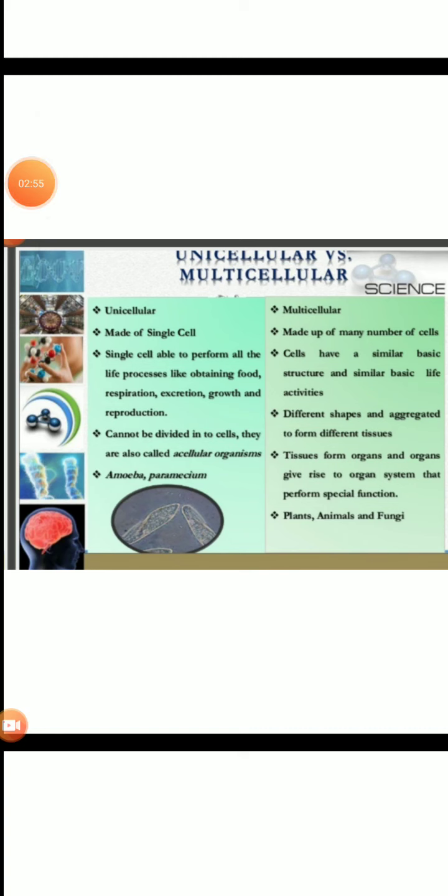In case of unicellular organisms, a single cell has the ability to perform all life processes. Whereas in case of multicellular organisms, different cells perform different activities. Examples of unicellular are amoeba and paramecium, and that of multicellular are plants, animals, and fungi.